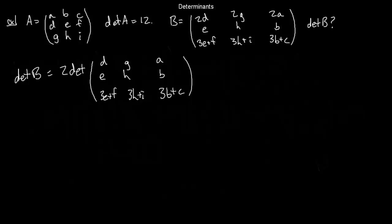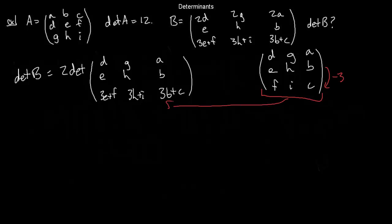All I've done is realize that B is the matrix obtained by multiplying the first row of some other matrix by 2, so det(B) = 2 times the determinant of that matrix. The next thing to notice is that the third row looks like I've added 3 times row 2 to the third row of the matrix D, G, A; E, H, B; F, I, C. That's a type 1 row operation, which doesn't change the determinant.